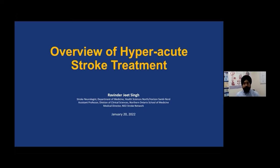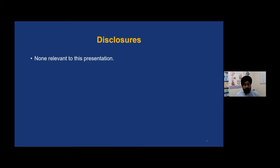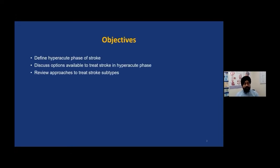Thank you very much for the kind introduction. My role here is to extend what Dr. Dashmuk already spoke about — once you have a diagnosis of stroke, how to manage stroke in the hyperacute period. I'll be talking about both the ischemic and hemorrhagic stroke subtypes. I have no relevant disclosures. The objectives are: first, to define the hyperacute phase of stroke; second, to discuss treatment options available in the hyperacute phase; and third, to review approaches to treat stroke subtypes.